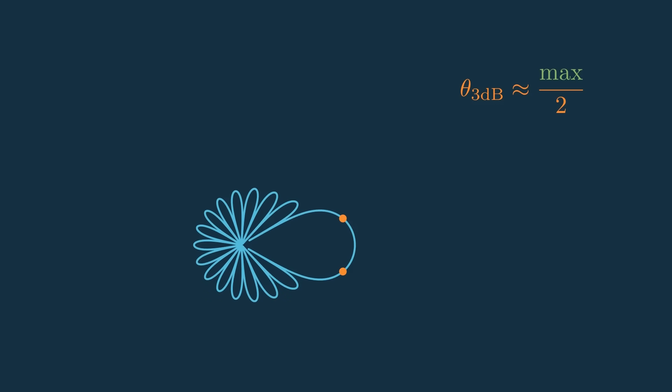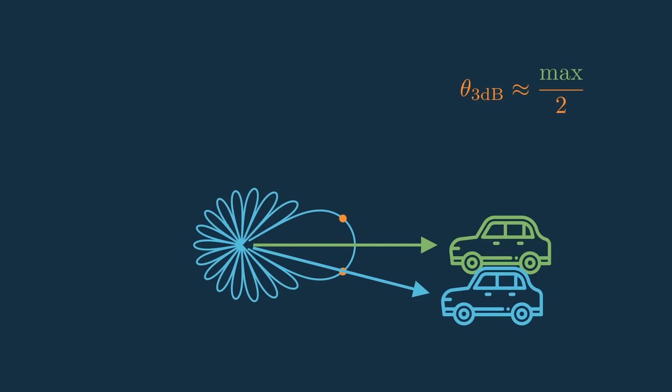Using the 3dB beam width, if we're looking at a target and another comes up at an angle outside that beam width, we know that, assuming the two targets have the same characteristics, the second target will be at most half the power of the first target, making it much simpler to differentiate between the two.